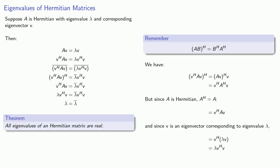If this isn't surprising, then you're not understanding what the theorem is saying. Remember, A is a matrix that could have complex entries, and so the characteristic polynomial for A will have complex coefficients. It's not obvious that such a polynomial would only have real roots.